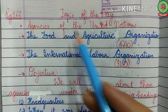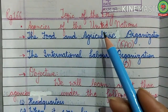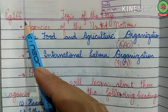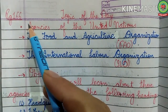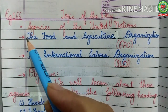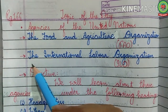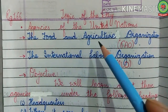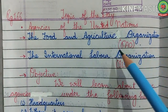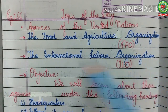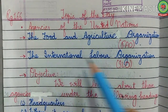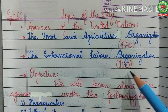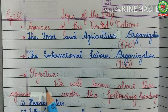Tell the functions of the Economic and Social Council. Today's topic is Agencies of the United Nations, covering page 166 of the book. We are going to discuss the first two agencies: the Food and Agriculture Organization (FAO) and the International Labour Organization (ILO).